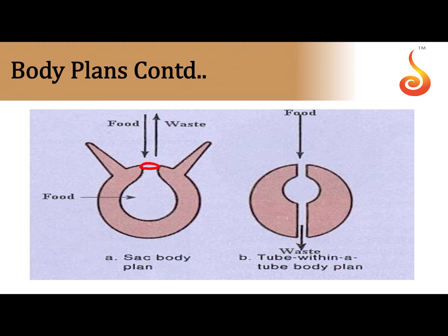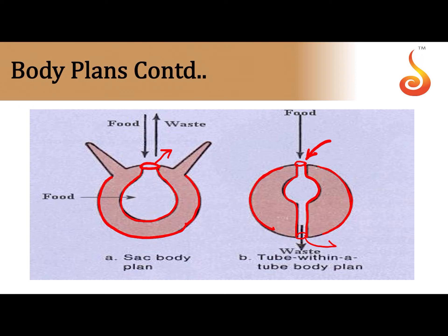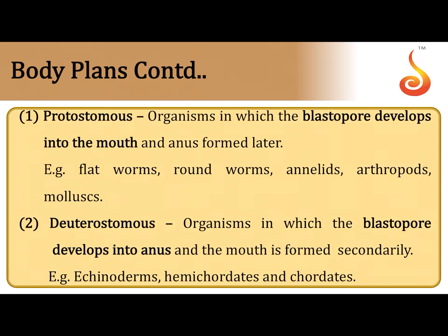In the blind sac plan, there is a single opening into the sac-like structure sitting inside the body wall. It is blind-ending, meaning it has only one opening that functions as both mouth and anus. In the tube-within-tube plan, the outer tube is the body wall and the inner tube is the gut, opening through the mouth at one end and ending with the anus at the other — a complete digestive system inside a bigger outer tube.